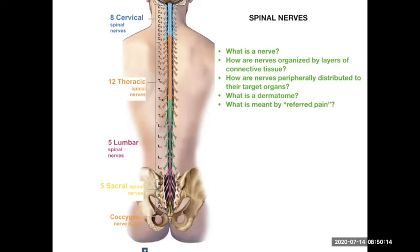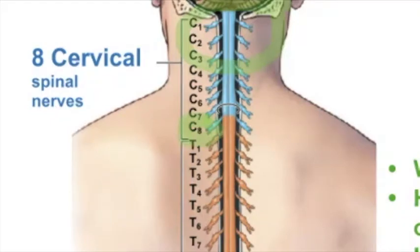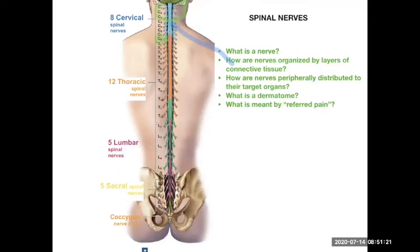The nerves branch out from the spinal cord and are named according to the cervical, thoracic, lumbar, or sacral vertebrae. Since the first nerve, C1, arises from above the first cervical vertebra, there are actually eight cervical nerves instead of seven. Each of these named nerves — C5, C6, C7, C8 — will branch off and innervate specific regions of the body.